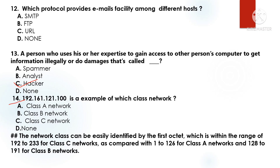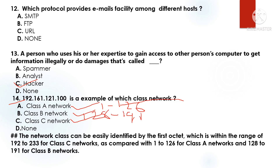Question 14: 192.161.121.100 is an example of which class network? Option C: Class C network. Class A network is 1 to 126; Class B network is 128 to 191; Class C network is 192 to 223.